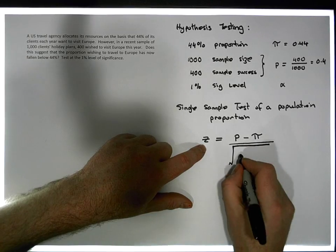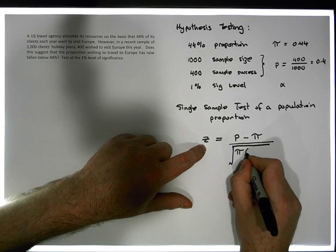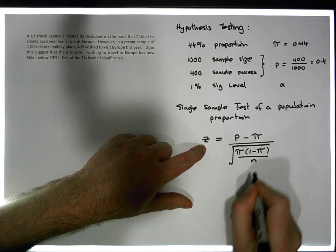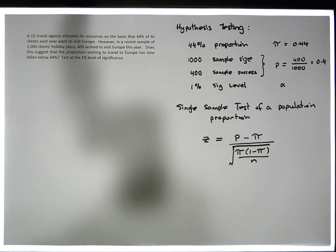Which is the standard deviation of a particular sampling distribution, which is defined to be the square root, now there's many ways we could write this, of pi, the proportion times 1 minus pi, divided by the sample size, which is small n. So that's our test statistic.